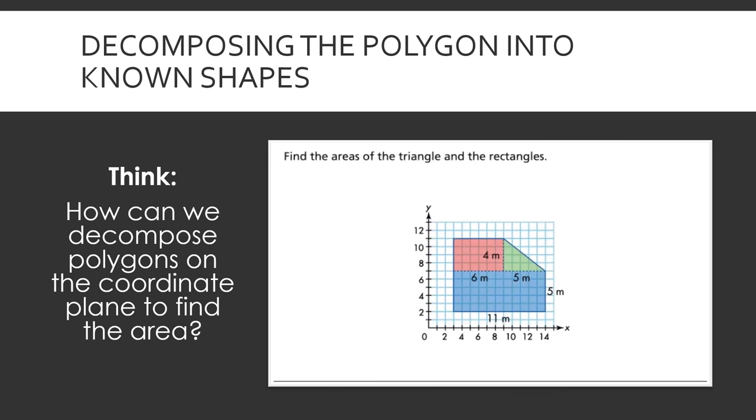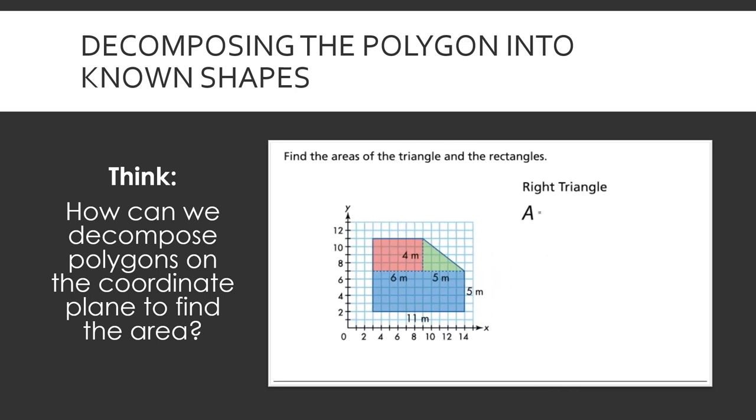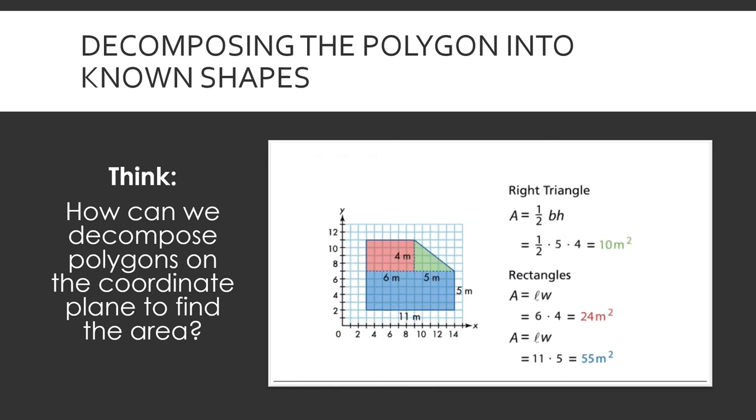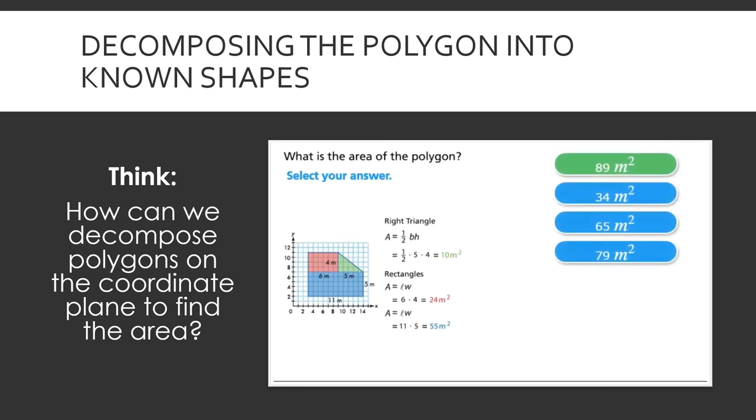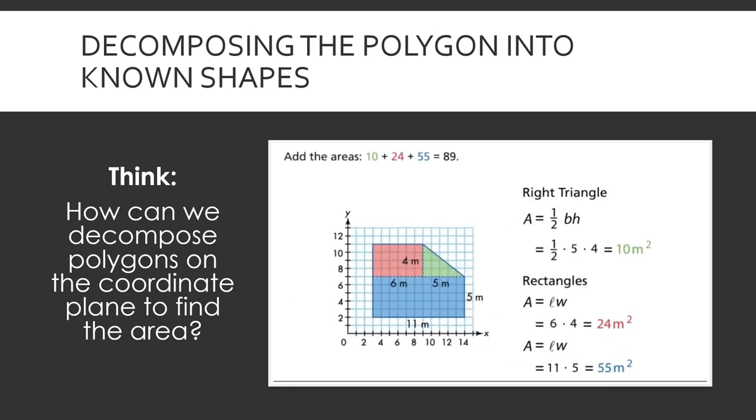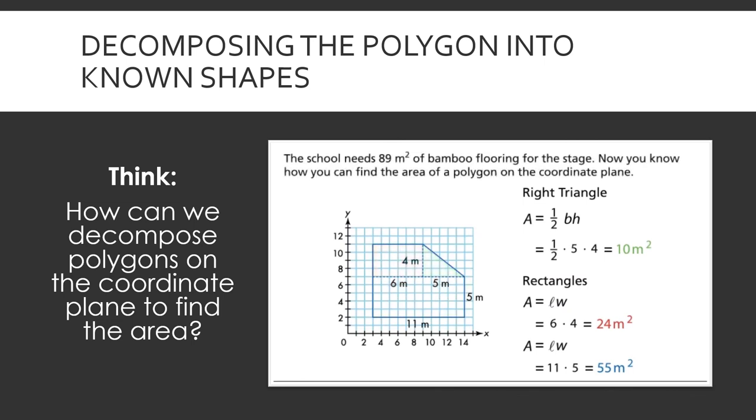Find the areas of the triangle and the rectangles. What is the area of the polygon? Add the areas. 10 plus 24 plus 55 equals 89. The school needs 89 square meters of bamboo flooring for the stage. Now you know how you can find the area of a polygon on the coordinate plane.